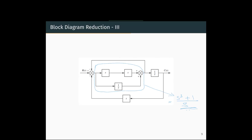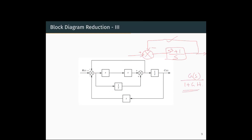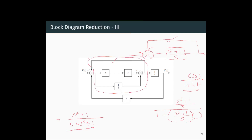That reduced block is now in a unity feedback loop. Applying the negative feedback formula G(S) divided by 1 plus G(S)·H(S), with G(S) equal to (S³ plus 1)/S and H equal to 1 for unity feedback, the reduced block becomes (S³ plus 1) divided by S·(S³ plus 1). This result is then in series with 1/S, so we multiply by 1/S.